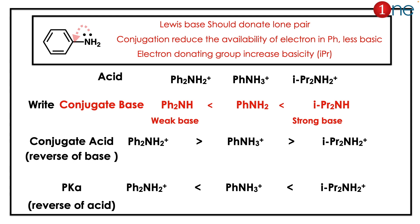Isopropyl amine is a strong base because of the electron-donating ability of the isopropyl group. If you convert basicity to conjugate acid, the order reverses, and pKa reverses again. So our final pKa order is: PhNH₂ < PhNH₃⁺ < isopropyl amine. The key concept here is: conjugation always decreases basicity, while electron-donating groups increase basicity.